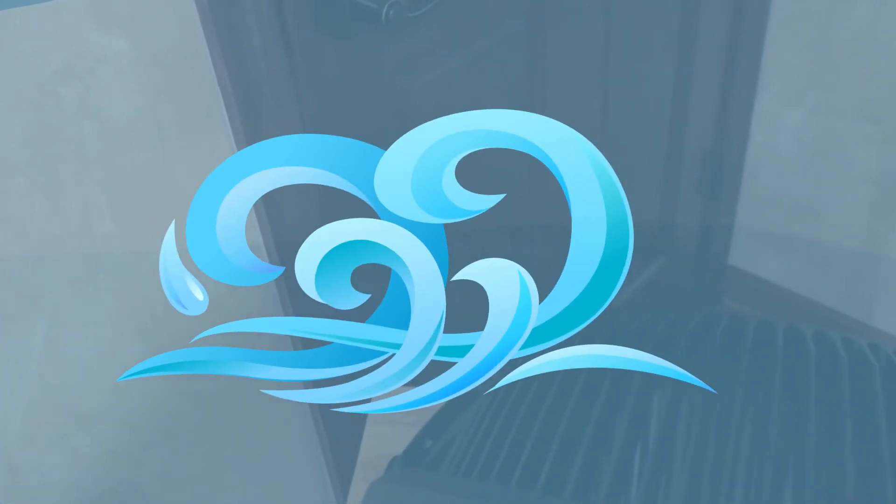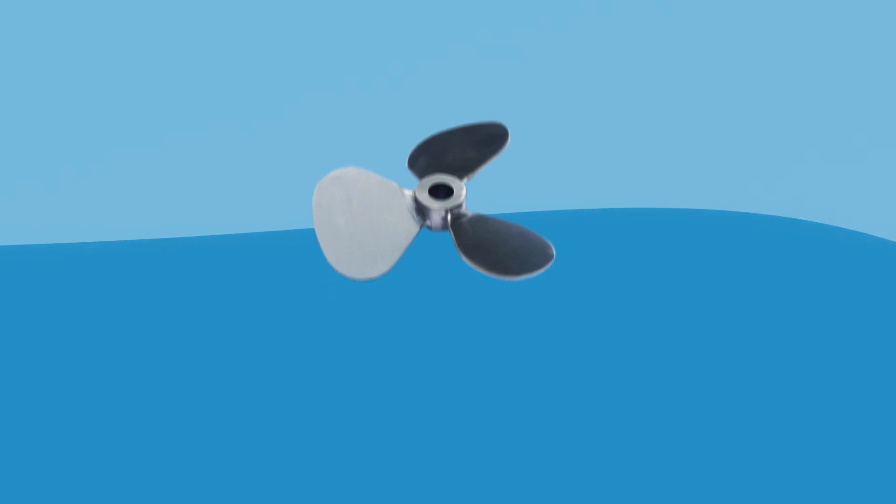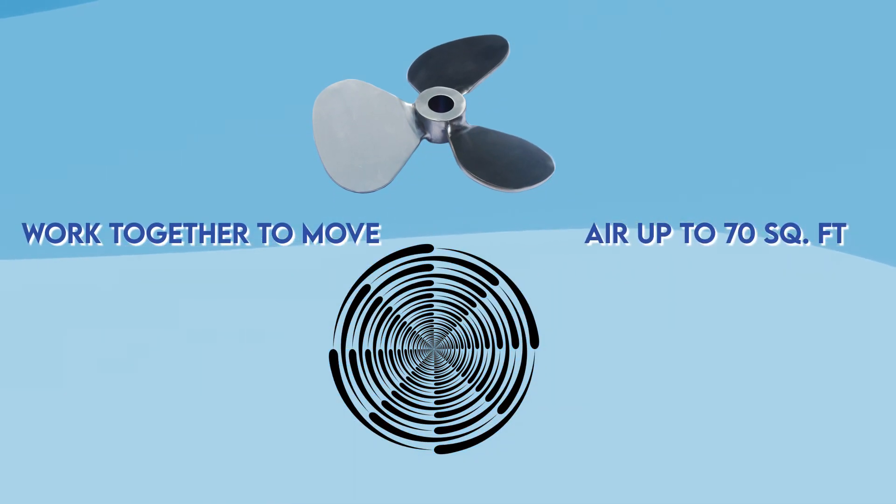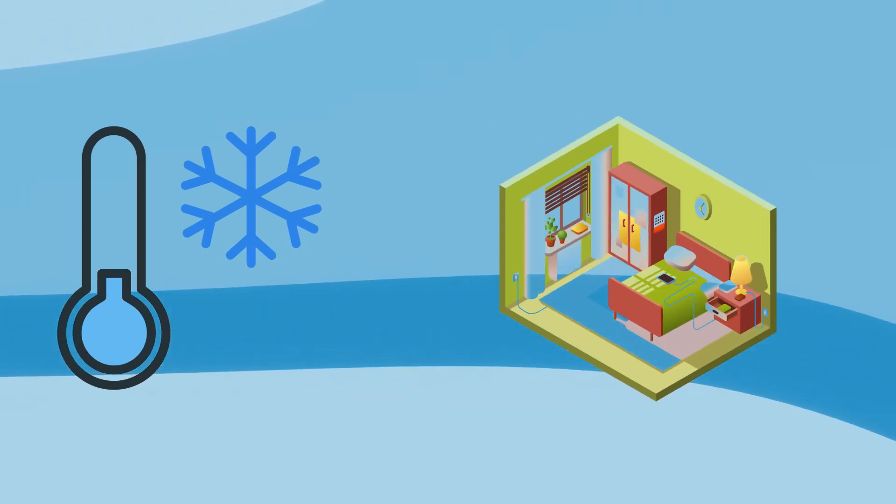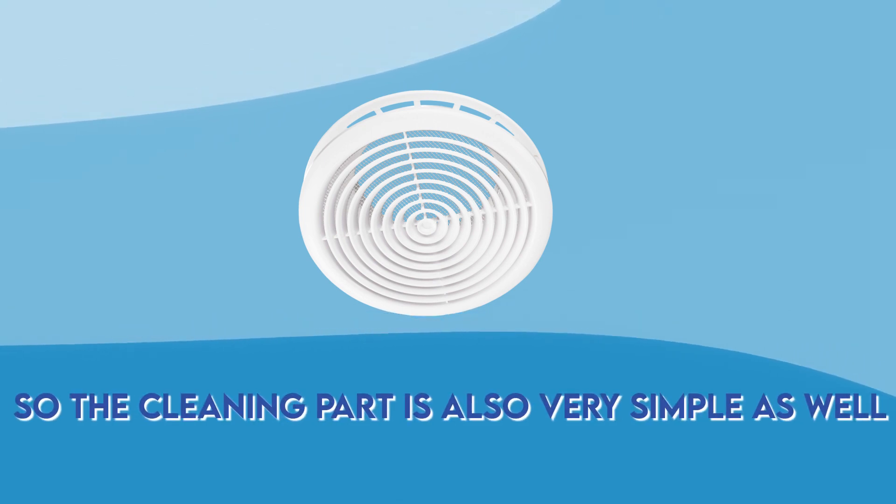And additionally, you can adjust the head of the fan to blow the cold air in any direction you want. The deep-pitched blades and the spiral grill work together to move air up to 70 square feet, so you can easily cool down a whole room with just this fan. The grills are very easy to remove, so cleaning is also very simple.